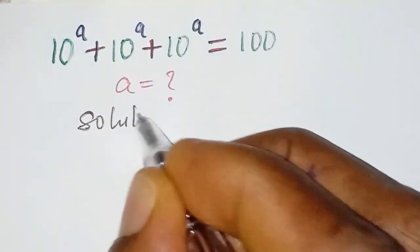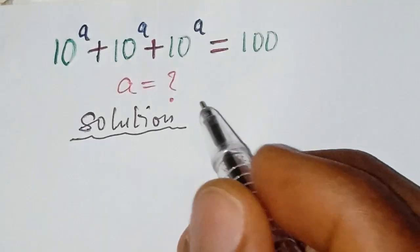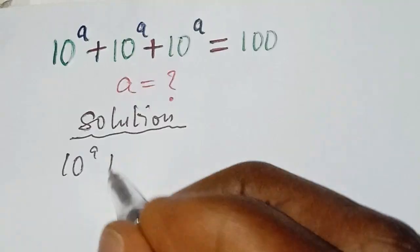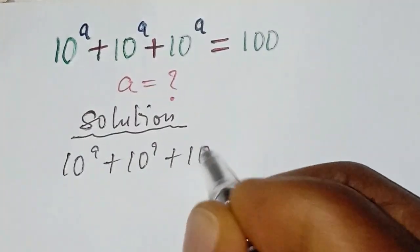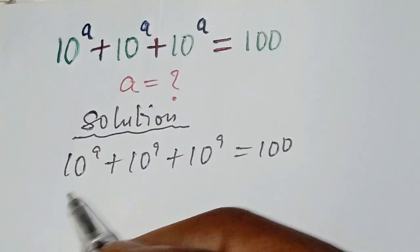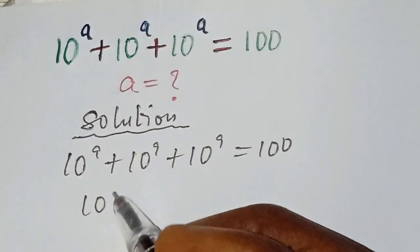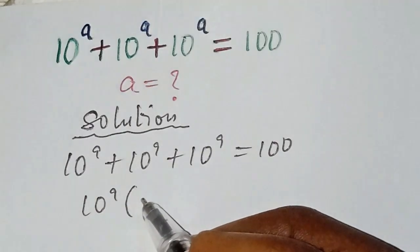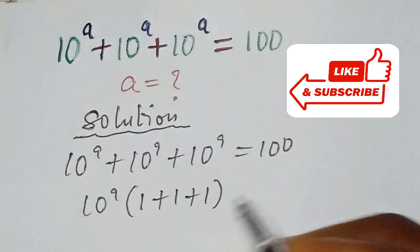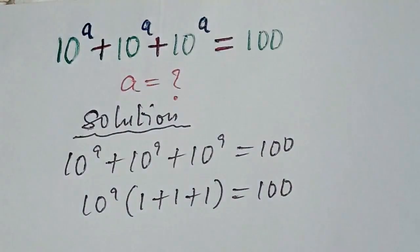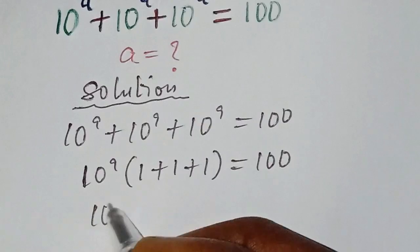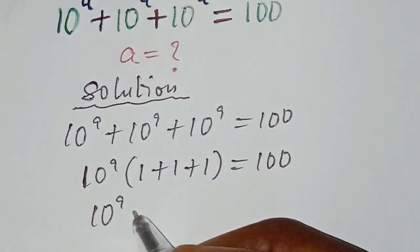We have 10 to the power of a, plus 10 to the power of a, plus 10 to the power of a, equal to 100. From the left-hand side, we take 10 to the power of a as a common factor. We open the bracket: 1 plus 1 plus 1, in the bracket, equal to 100.